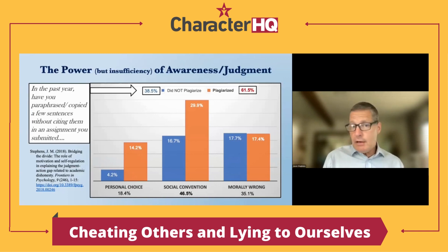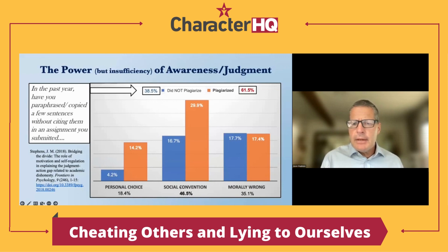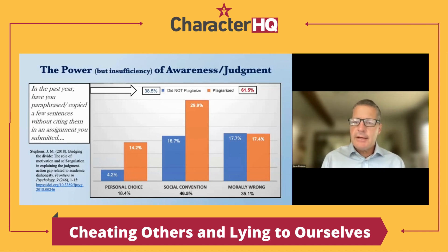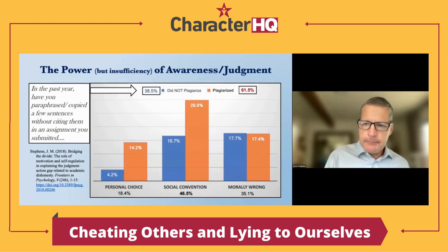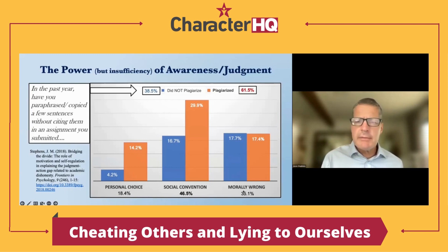In a separate question, students were asked whether doing this kind of thing — paraphrasing, copying sentences — was a personal choice (you could do it if you wanted, nobody's business), a social convention (against school rules), or morally wrong (regardless of school rules, something one shouldn't do). The definition of morality is that even if there's no rule or law against it, it would be wrong to do. Most students thought it was a social convention — wrong because the school says so. About a third said it was morally wrong: taking somebody else's words or ideas and representing them as your own is a kind of theft.